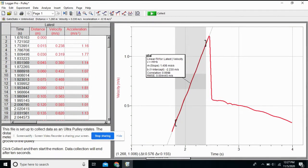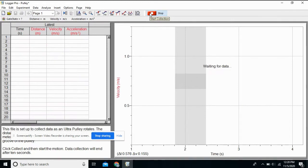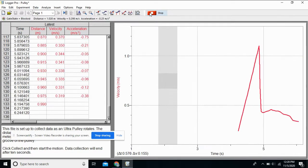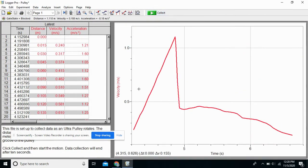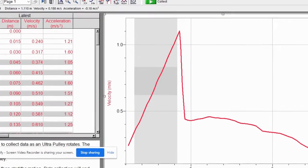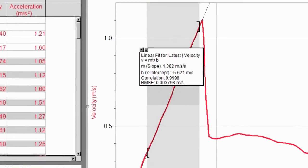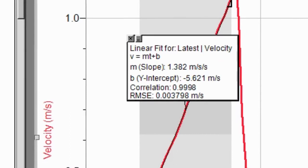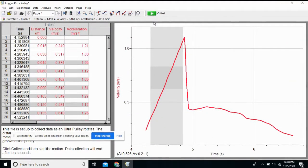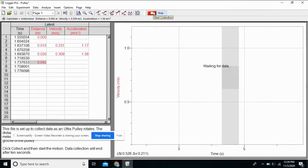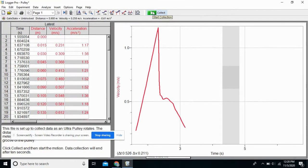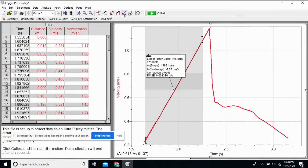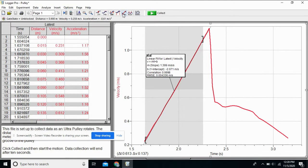All right, we are on trial three of system two. System two, trial three. Here we go. 1.382. Excellent. This is pretty consistent. This is some nice data, everybody. This is system two, trial four. Here we go. 1.399 meters per second squared. Okay.